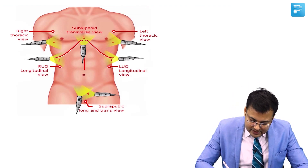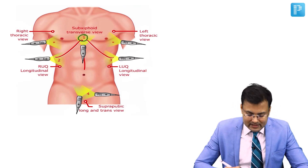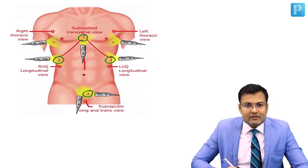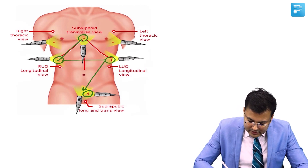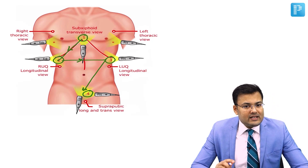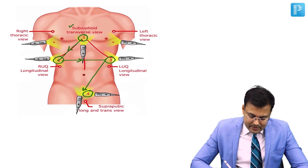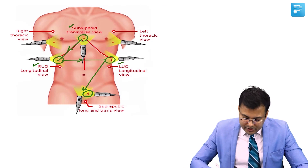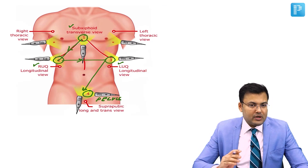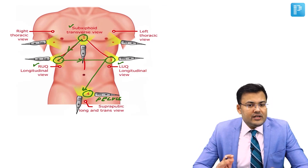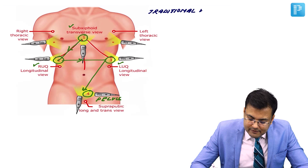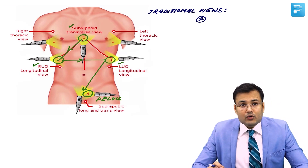In sequence: pericardial sac uses subxiphoid transverse view; perihepatic region uses right upper quadrant longitudinal view; perisplenic region uses left upper quadrant longitudinal view; and pelvis uses suprapubic longitudinal and transverse views. There are four traditional views in FAST.